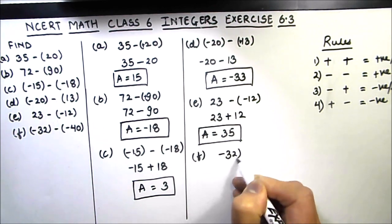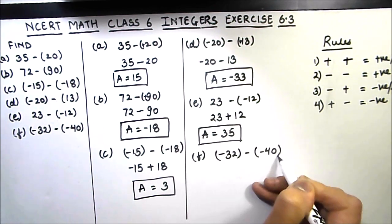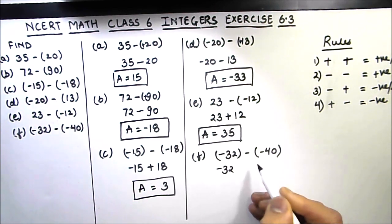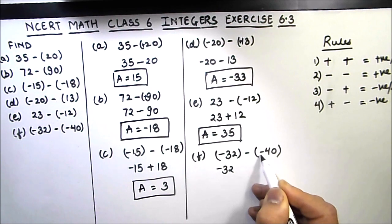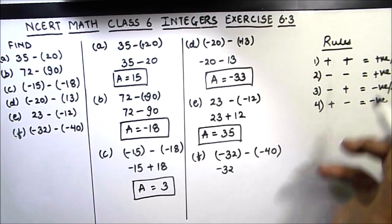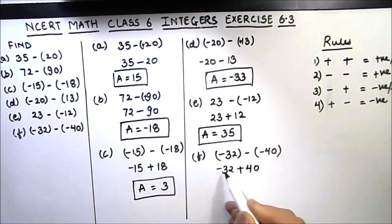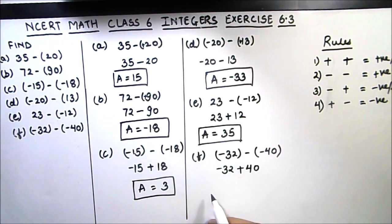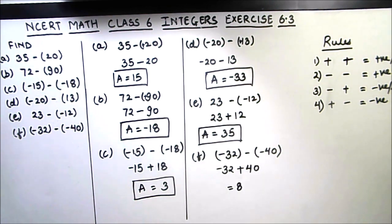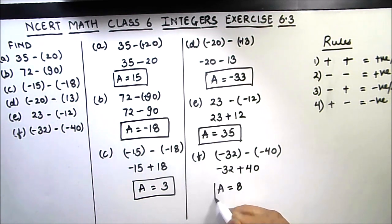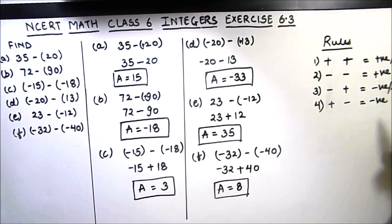The last part is minus 32 minus (-40). Opening the brackets: minus and minus — same sign — gives positive, so this becomes minus 32 plus 40. Minus and plus are different signs, so we subtract: 40 minus 32 is 8. The sign should be of the bigger number, which is 40, so the answer is plus 8. This is how you can do integer subtraction using these rules.